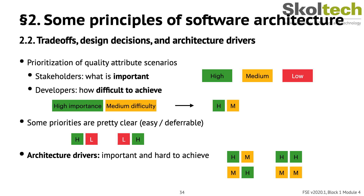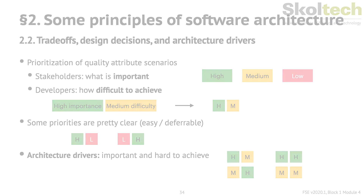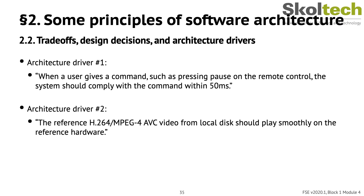Developers use architecture drivers as test cases when creating and evaluating architecture options. For our media player, the two highest-priority technically challenging quality attributes become our architecture drivers. Architecture driver one: when a user gives a command such as pressing pause on the remote control, the system should comply within 50 milliseconds. Architecture driver two: H.264 AVC video from local disk should play smoothly on the reference hardware.